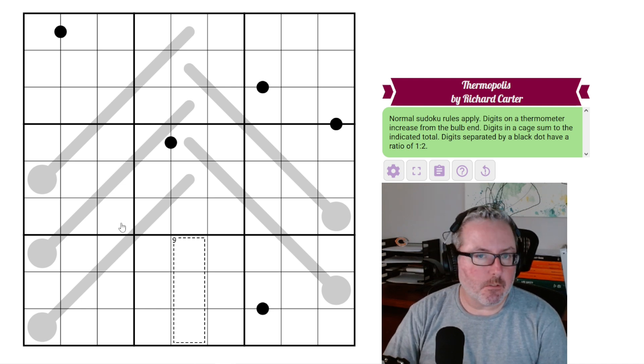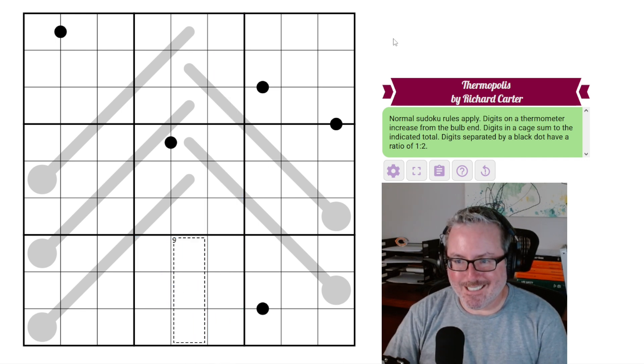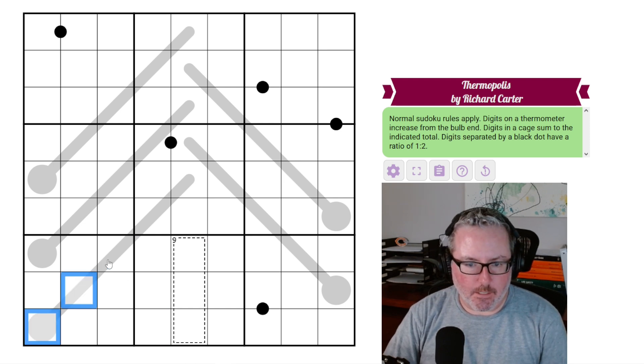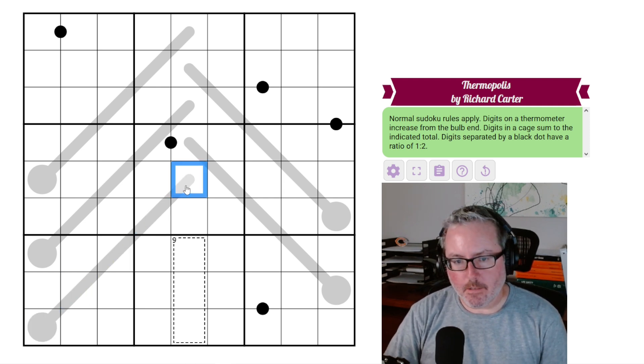So we have normal Sudoku oversupply, so every row, every column, and every 3x3 box contains the digits 1 through 9 once each. Digits on a thermometer increase from the bulb end. So let's look at any of these. This is the bulb, this is the tip, this is the lowest digit, and they continue up until they get to the highest digit. Now, of course, they can be separate versions of all of these on each thermo.